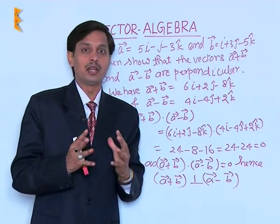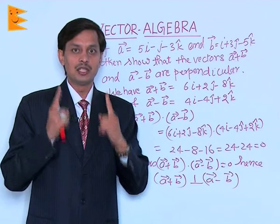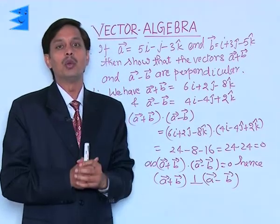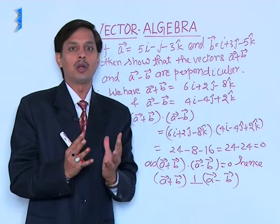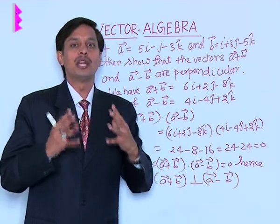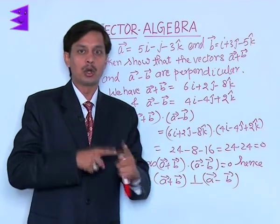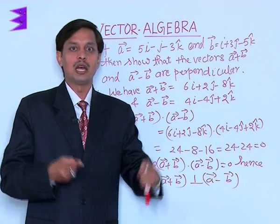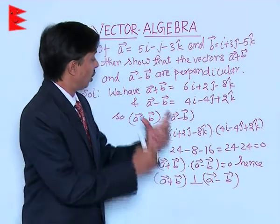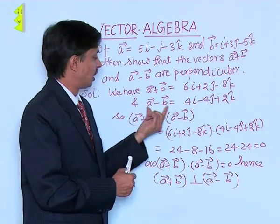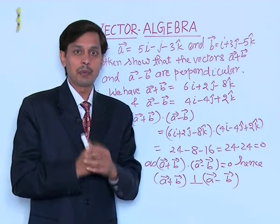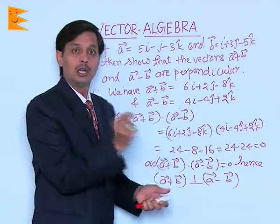We want to show that these resulting vectors — vector A plus B and vector A minus B — are perpendicular to each other. The condition is: if the dot product of two vectors equals zero, then those two vectors are said to be perpendicular, and vice versa. To show these are perpendicular, we need to calculate their dot product.